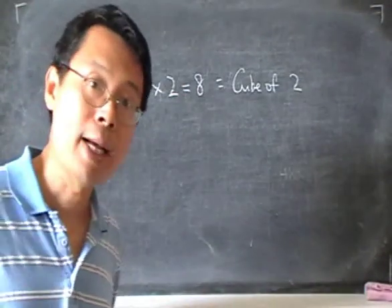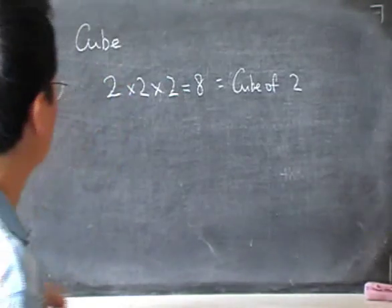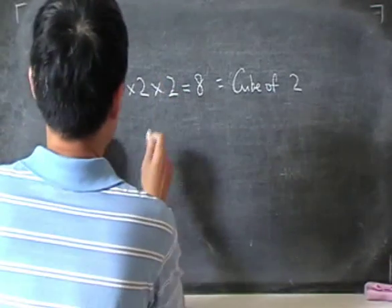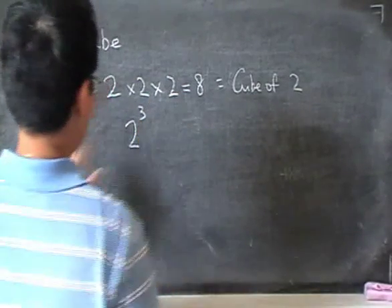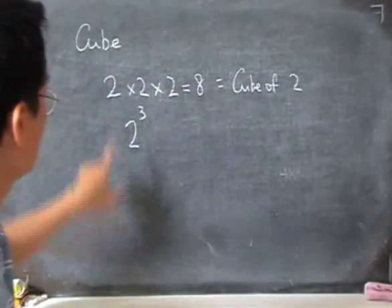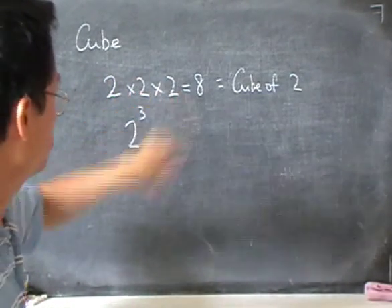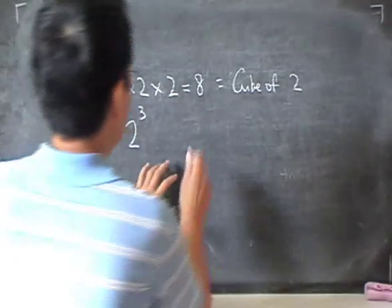And like for the square, there is a symbol for this, a way to write it more simply. And that's 2 with a little 3 on top. So the little number 3 there just means that you have 3 of the 2's multiplied together. That's the symbol, and that's 8.